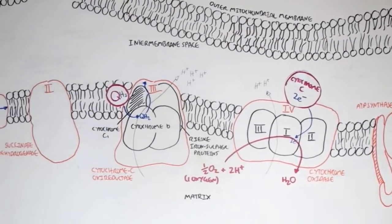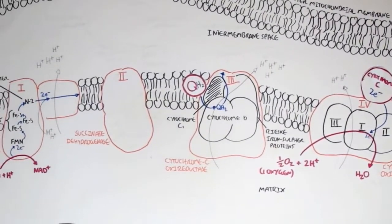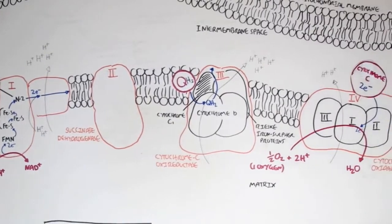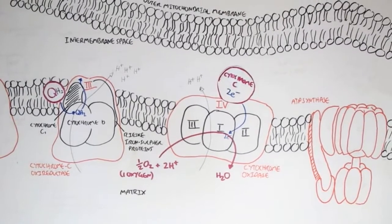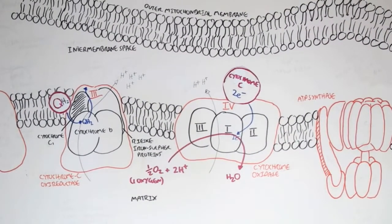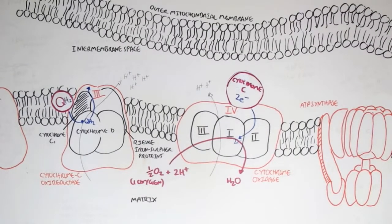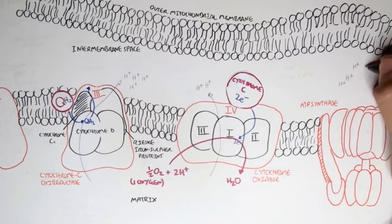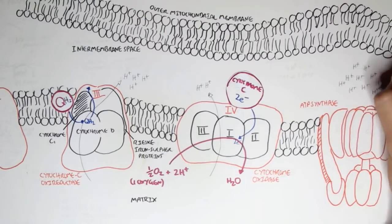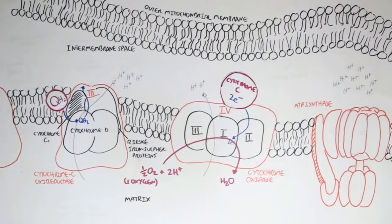Remember, these electrons came from only one NADH. If we calculate all the protons pumped from one NADH, we have 4 from complex 1, another 4 hydrogen ions from complex 3, and another 2 from complex 4, giving us a total of 10 hydrogen ions — 10 protons — pumped from the matrix into the intermembrane space through one NADH molecule. This also creates one water molecule from complex 4.